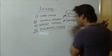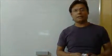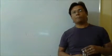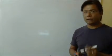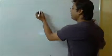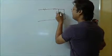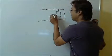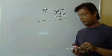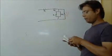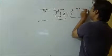Now coming to one more point where questions are asked in examinations — about resistance referred to primary, resistance referred to secondary, inductance referred to primary, or inductance referred to secondary. In the equivalent circuit we have resistance, inductance, and shunt branch parameters. This includes R0, X0, R1, X1, and on the secondary side, R2 and X2.